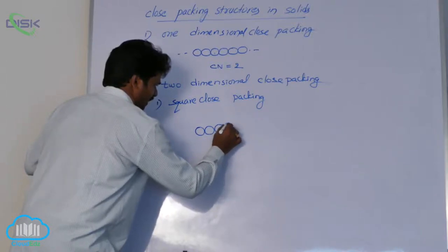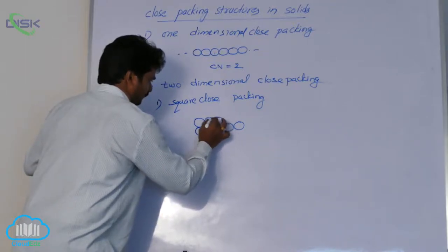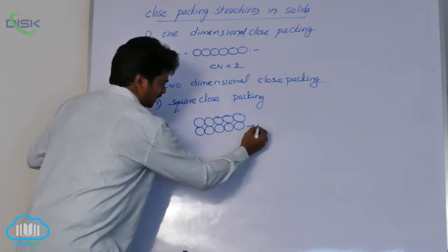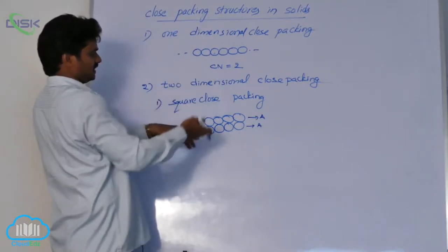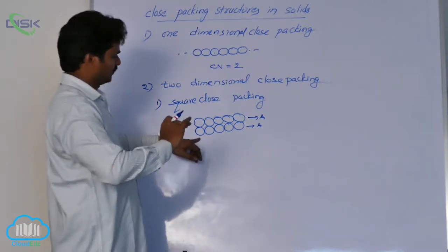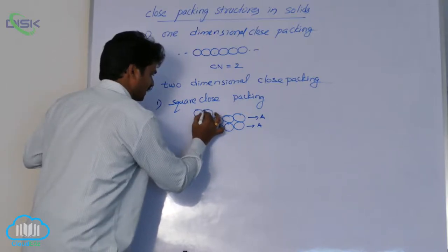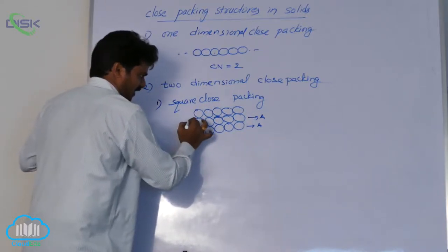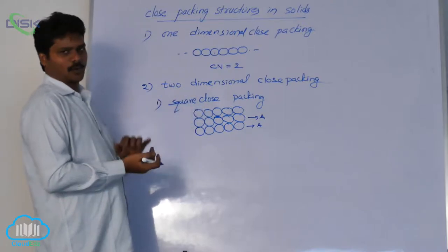This is the first row of spheres, and this is the second row placed over the first one. If the first row is named A, this row is also A. Arranging one row over the other such that spheres are aligned vertically and horizontally — this arrangement is called square close packing.